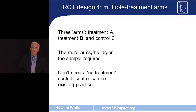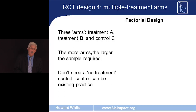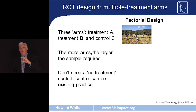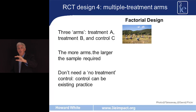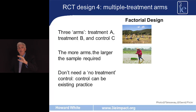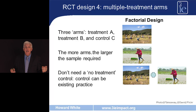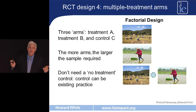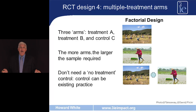A special case of multiple treatment arms is the factorial design. Treatment arm A gets a particular intervention, for example agricultural extension services; treatment arm B gets a different intervention, for example a seed subsidy; and treatment arm C gets both A and B together, so we can test the complementarity hypothesis. A fourth untreated control arm could also be included.